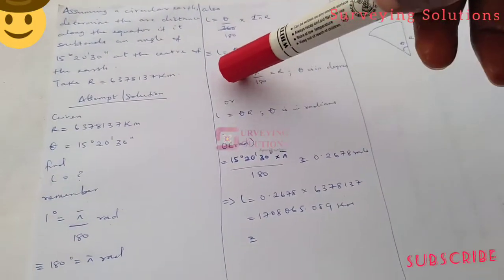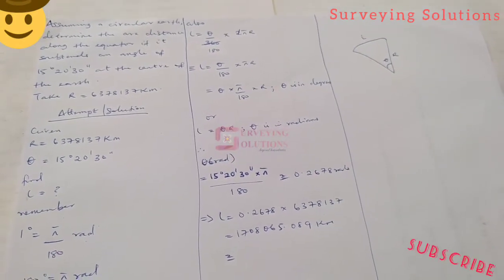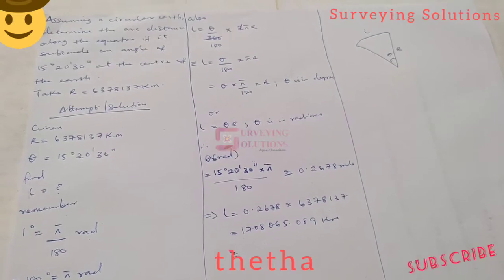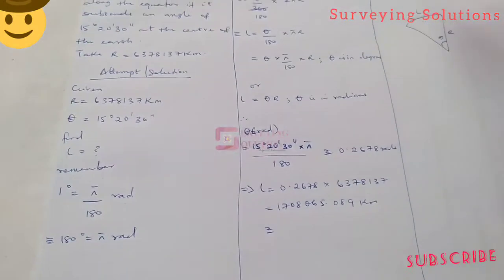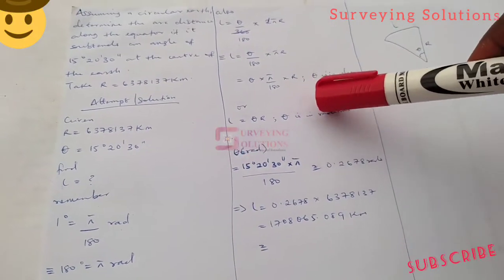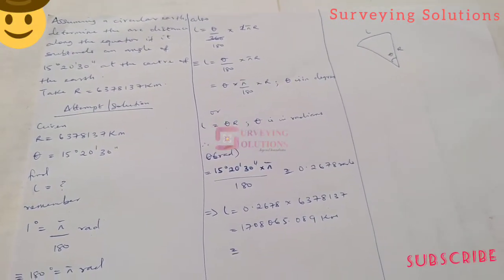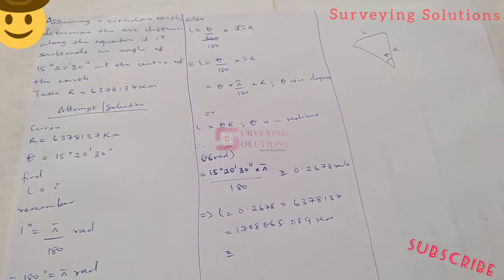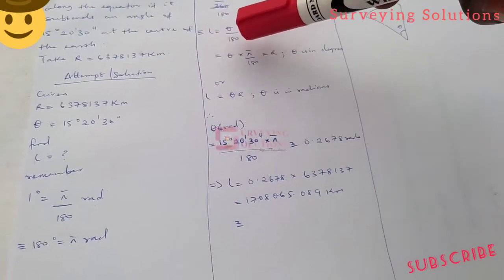Instead of having θ times π over 180, we now have θ times r, but now the θ is in radians because when we want to determine the arc length our angle must be in radians.